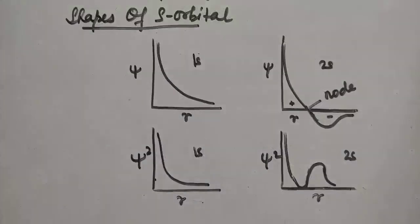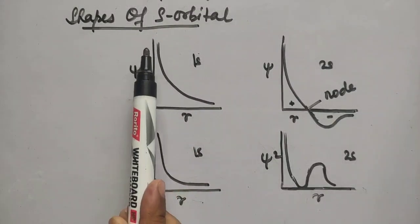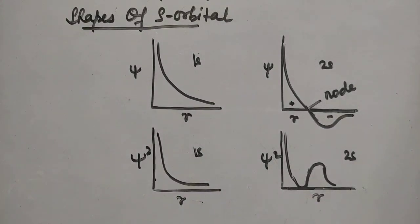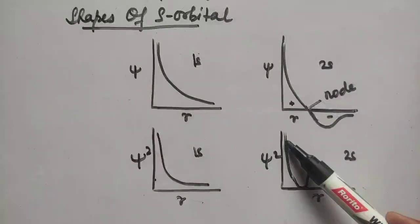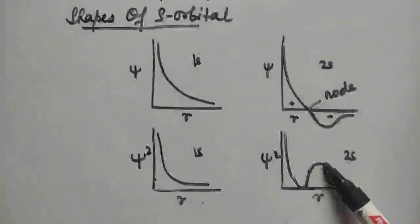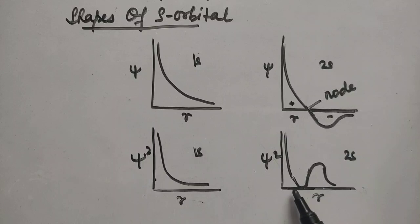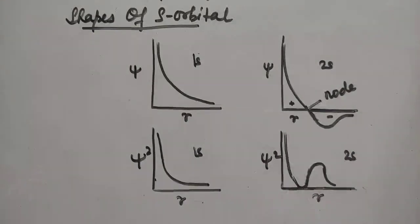You can observe that the probability of the 1s electron is found to be maximum near the nucleus, having the highest value, and it decreases gradually as the distance from the nucleus increases. In case of 2s, the electron probability is again maximum near the nucleus, decreases to zero, then increases again and decreases once more. The intermediate region where the graph touches the axis — where ψ² equals zero — means the probability of finding the electron is zero there.